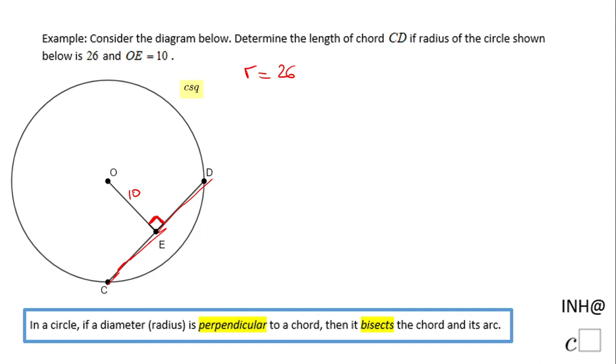In other words, these two segments are congruent because OE is perpendicular to the chord. Now we can draw this segment which is the radius, and remember the radius is 26.